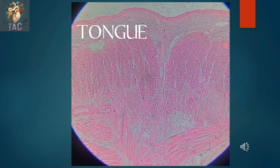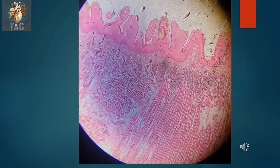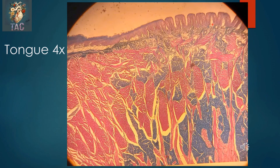Another slide of the tongue from the under surface showing stratified squamous non-keratinized epithelium, a small amount of connective tissue, and skeletal muscle fibers running in different directions. Another slide showing filiform papillae with stratified squamous keratinized epithelium and skeletal muscle. Again, another slide showing foliate papillae in a row, the under surface of the tongue with connective tissue and skeletal muscles in different directions, and with the blue stain you can see the mucous acini.